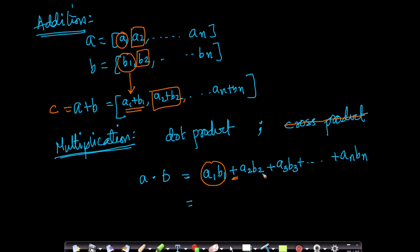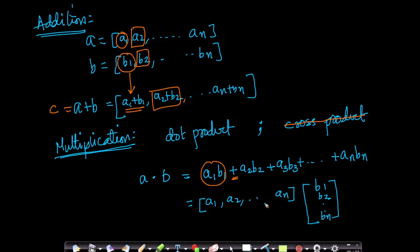In vector notation, a dot b can be written as a row vector a multiplied by a column vector b. The row vector a is a 1×n matrix, and the column vector b is an n×1 matrix. Since the inner dimensions match, you can multiply them, and simple matrix multiplication gives exactly a1·b1 + a2·b2 + ... which is the dot product.